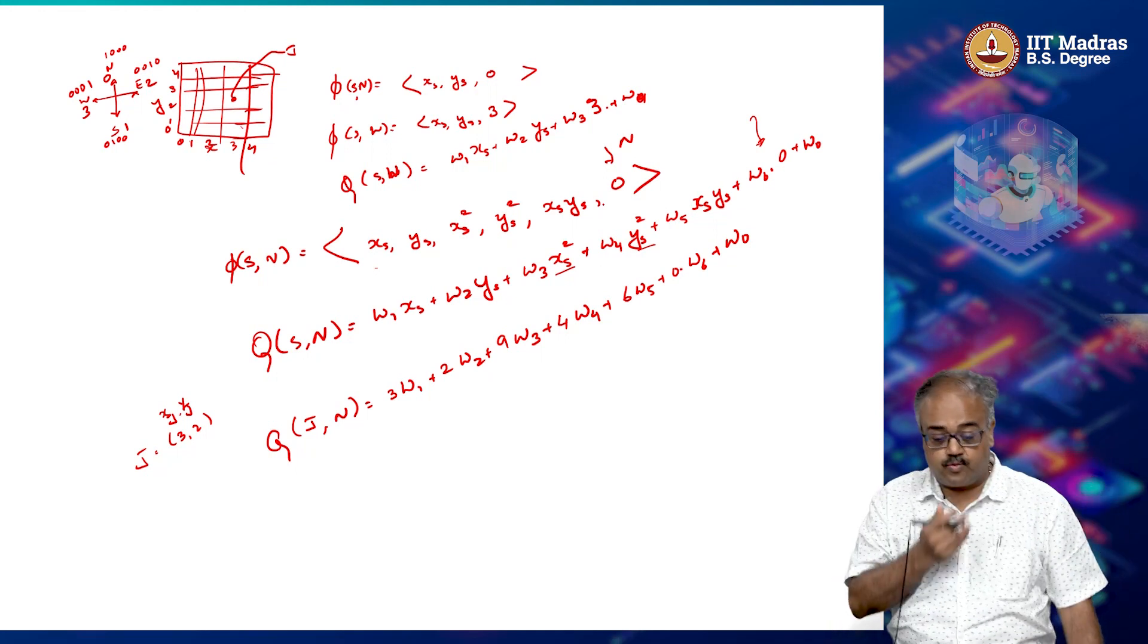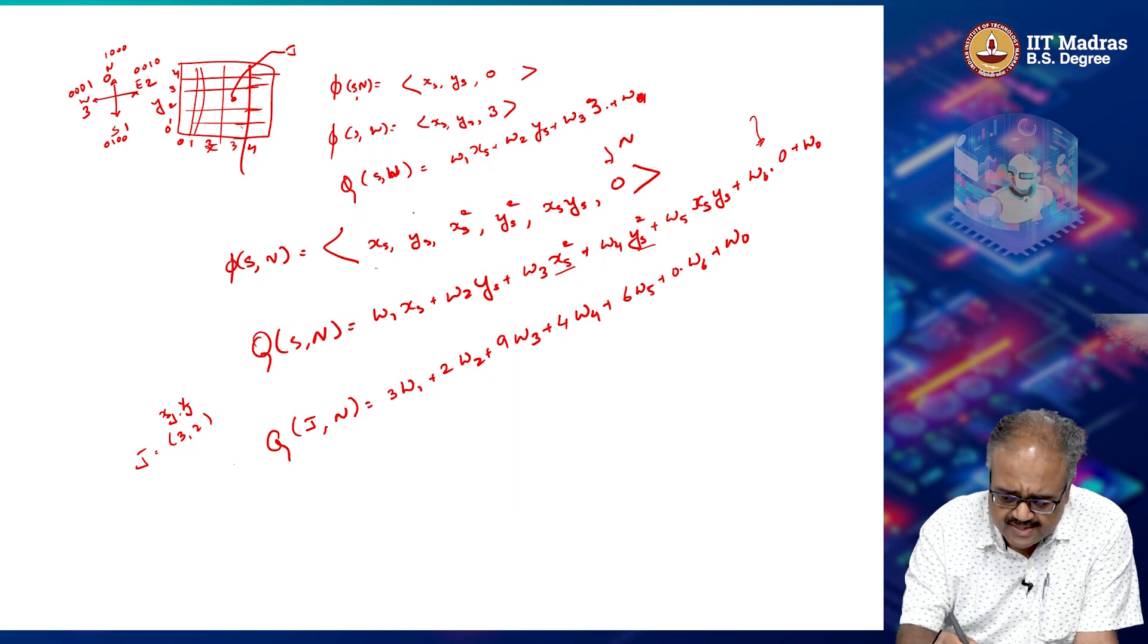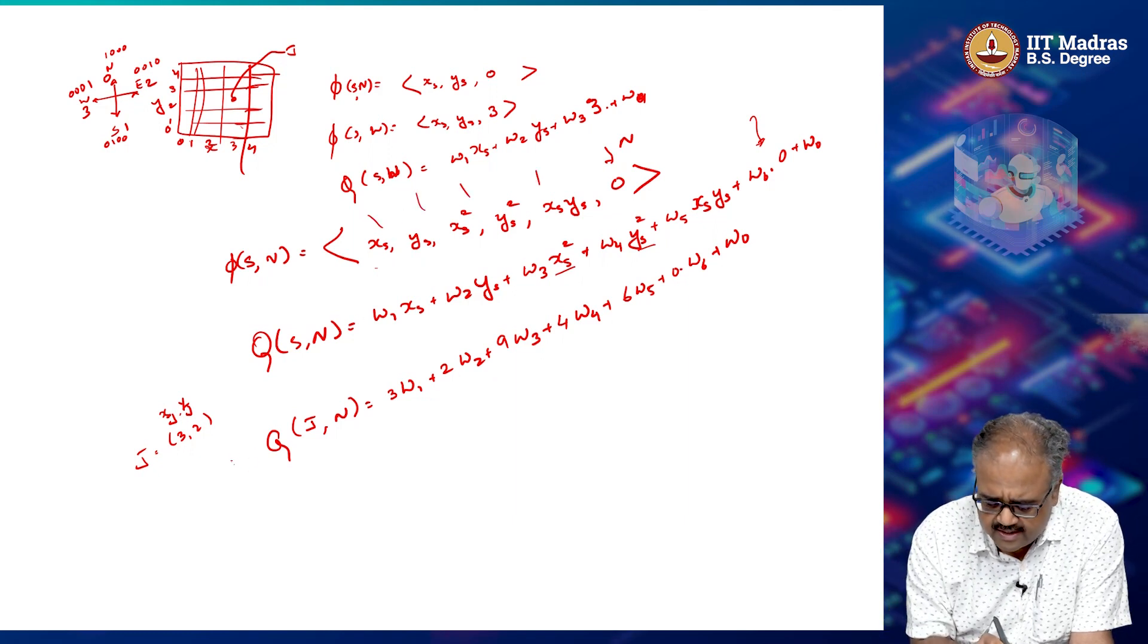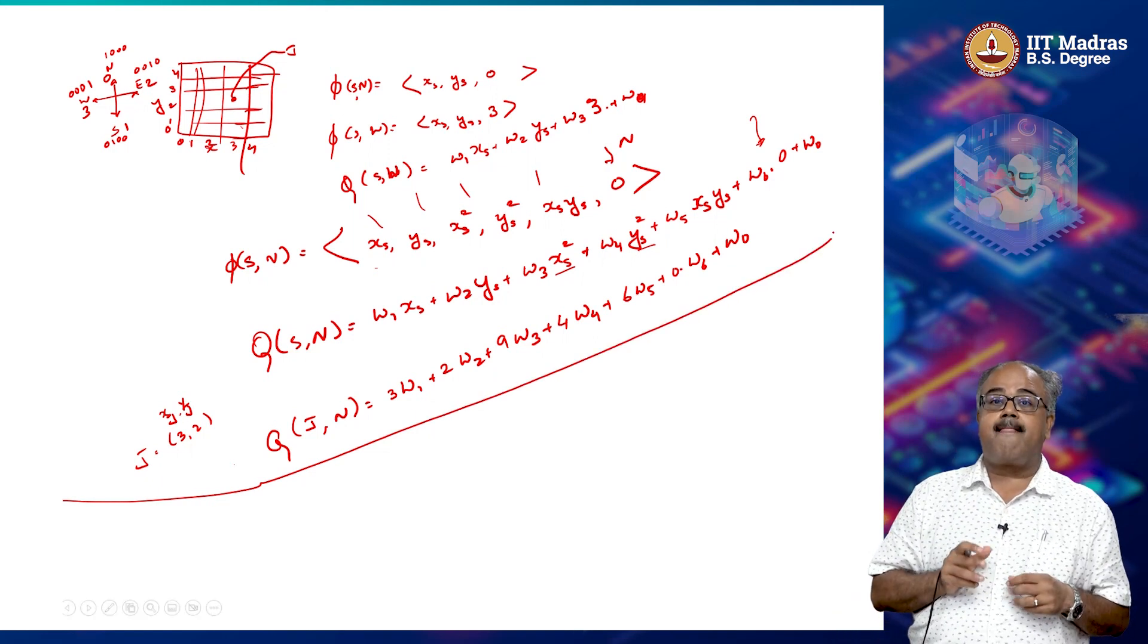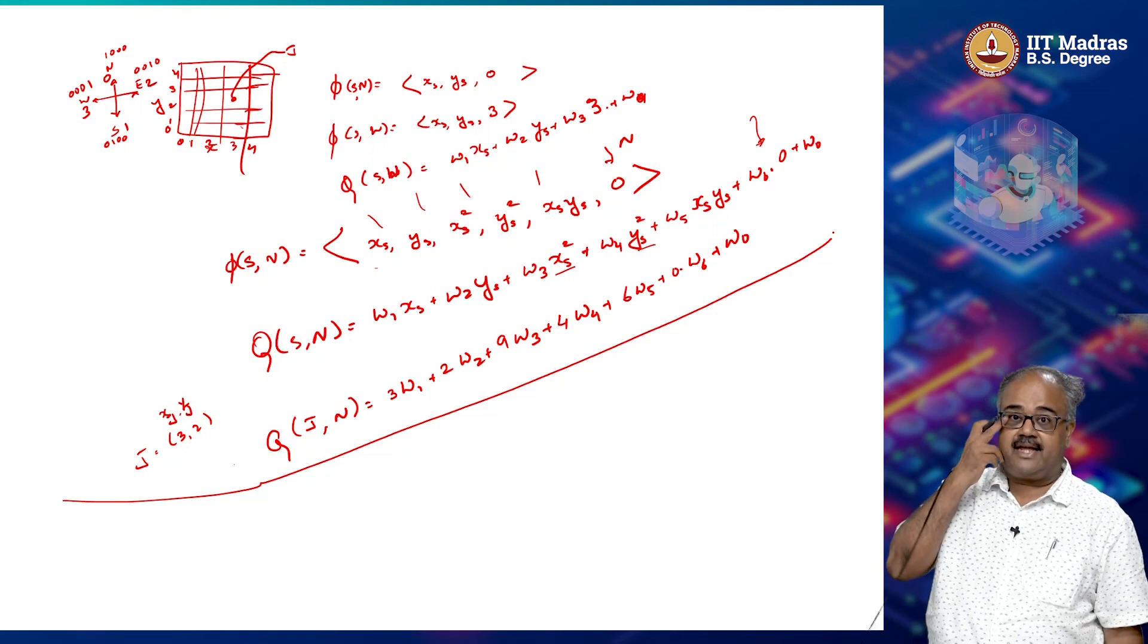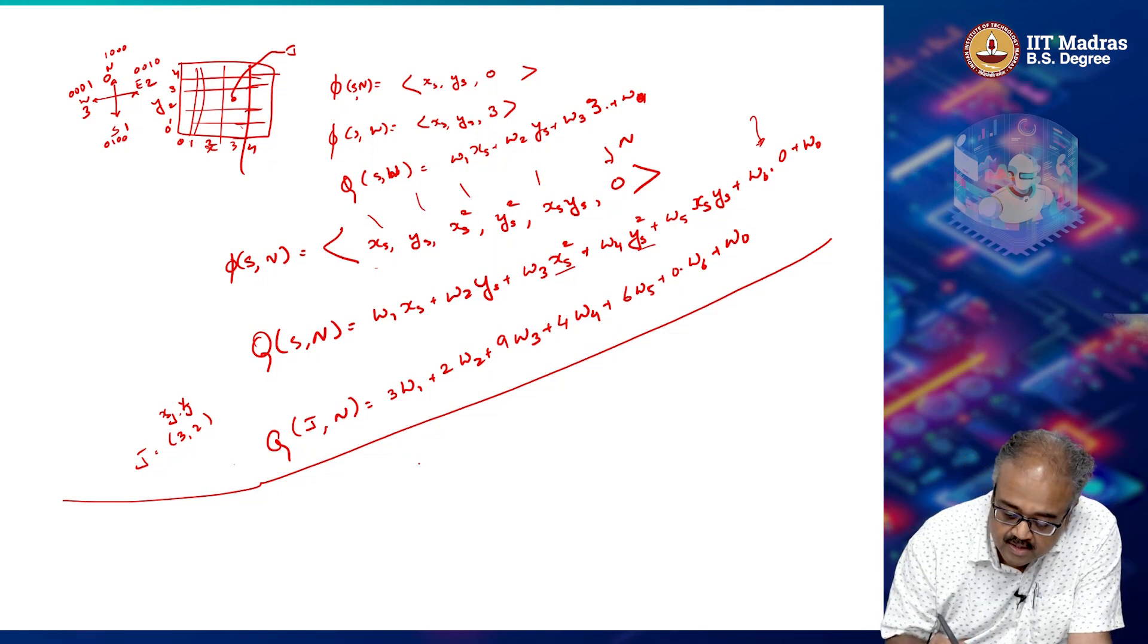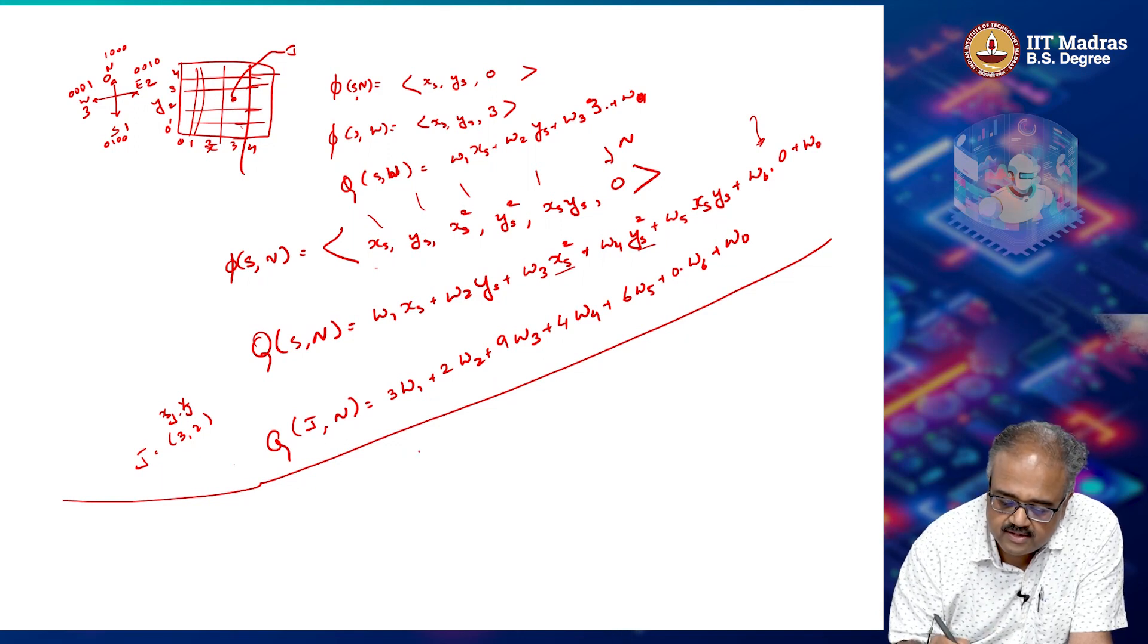But all of these you can still learn in terms of what the features are. So apart from this, this is one class of feature vectors that I can have, basically some kind of mathematical functions. I could also have feature vectors that are logical functions of the state variables.